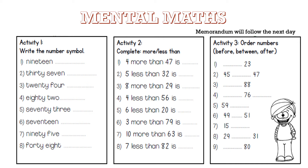You have three activities. Activity one, where you must write the number symbol. Activity two, complete more or less than. And activity three, to order the numbers, where you must write the number before, between or after.